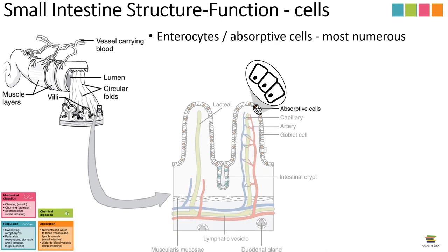Let's focus a little more on the cells that compose the small intestine, as there are a few different cell types serving different functions. The first and most common type are the enterocytes, also known as absorptive cells, which — as their name suggests — are involved in absorbing nutrients. These are the most numerous. They form a continuous wall on the villus, with food on the outside and the internal part of the body — the interstitium — on the inside, where capillaries and lymphatic vessels are present. Those lymphatic vessels are termed lacteals and collect absorbed material, bringing it into circulation.